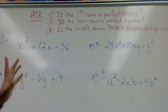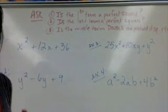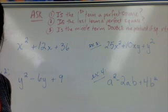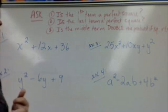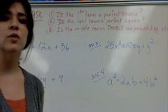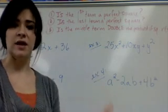First question is, is the first term a perfect square? Then the second question you should ask yourself, is the last term a perfect square? And the third question you want to ask yourself is, is the middle term double the square roots of the first and last?